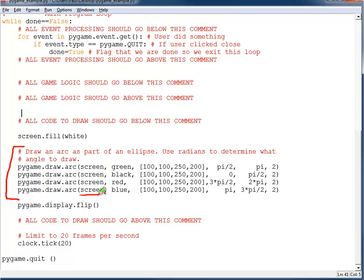I've got the screen that I'm drawing on. I've got the color. In this case I'm drawing 4 different arcs and I'm color coding them green, black, red, and blue, so we can figure out which line of code goes with which arc that I've drawn.